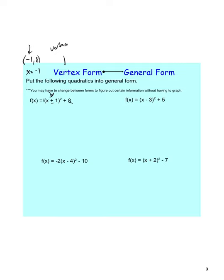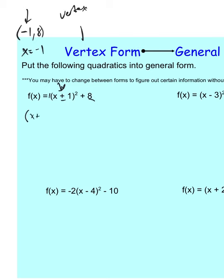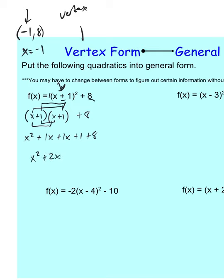Let's move it over to standard form. To do that, x plus 1 squared is really x plus 1 times x plus 1, and we have that plus 8 at the end. We'll FOIL: first is x squared, outside is 1x, inside is also 1x, and last is 1 times 1 or 1, plus 8. When you combine like terms, you get x squared plus 2x plus 9. This helps us find our y-intercept. So from these two forms, we found the vertex and axis of symmetry from vertex form, and the y-intercept from standard form.